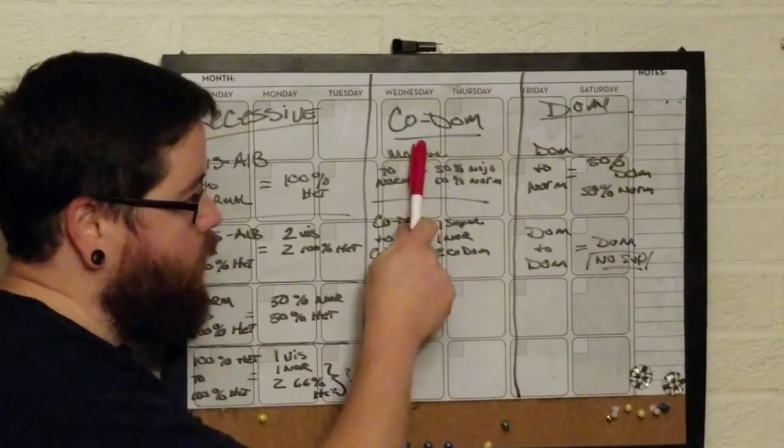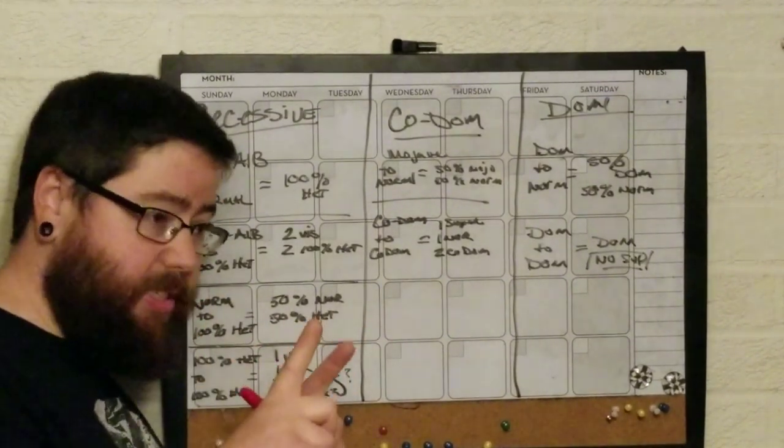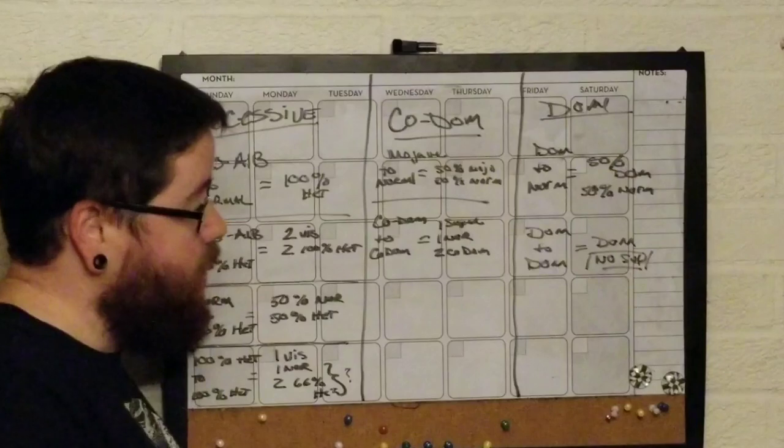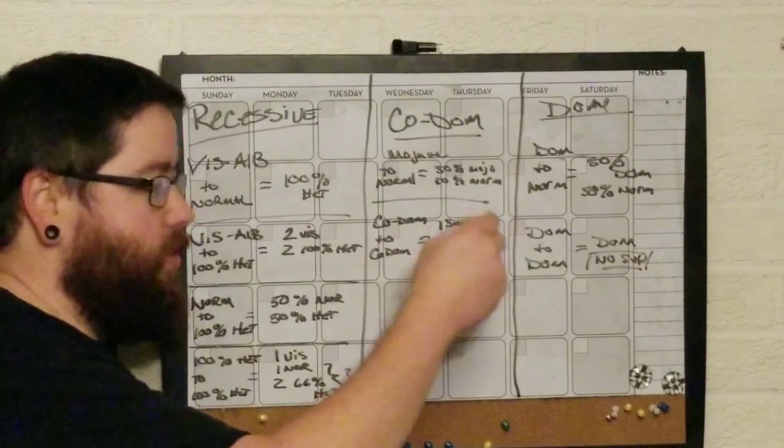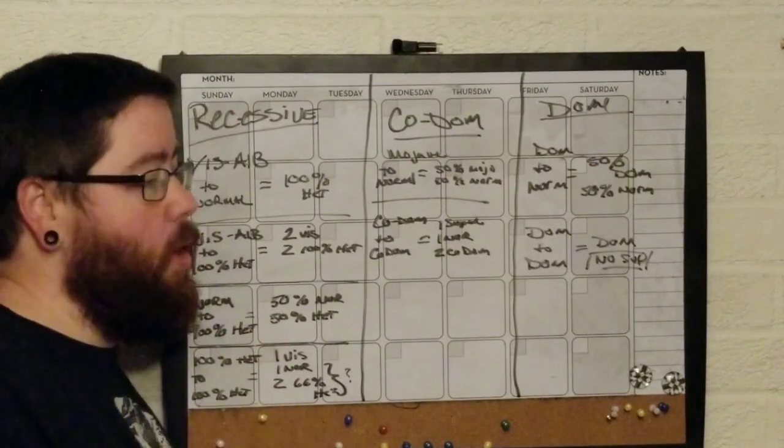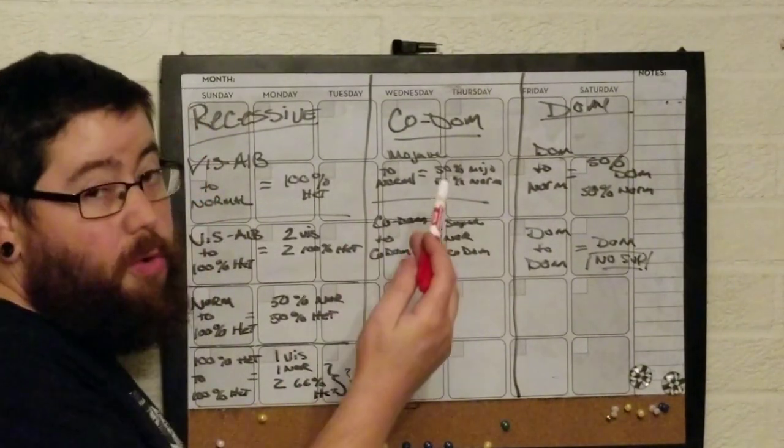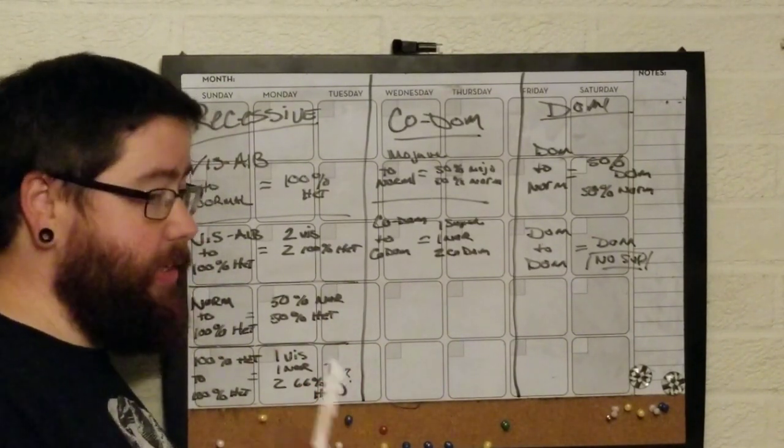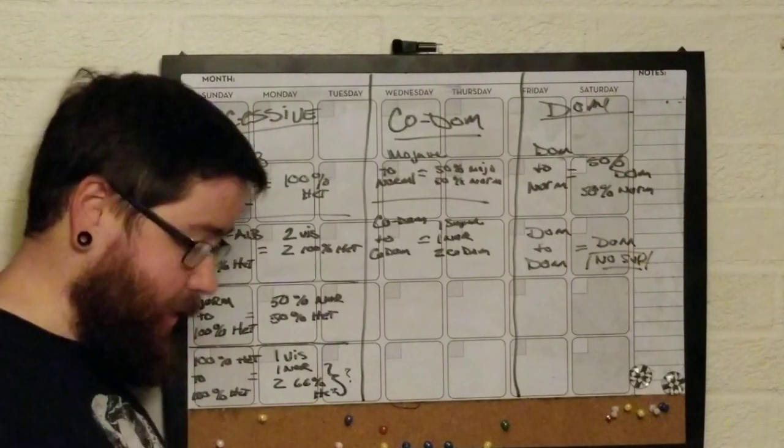Now if you take the kodom, which was Mojave, and you bring it to another Mojave, so two visual Mojave snakes together, you'll get, again, one that's a Super, which would be a Super Mojave or a Blue-Eyed Lucy. You're going to get one normal, and you'll get two that are Mojave. And again, this is all just percentage-wise. You may get no Supers, you may get all normals, you may get two kodoms and two normals. But this is what theoretically you should get if you have four eggs. So that's kodom. Really simply, there's only two ways to do it. You take a kodom to a normal and get 50-50s, or you take a kodom to itself and you get Supers, one normal, and two that are codominant. That's the way it works.